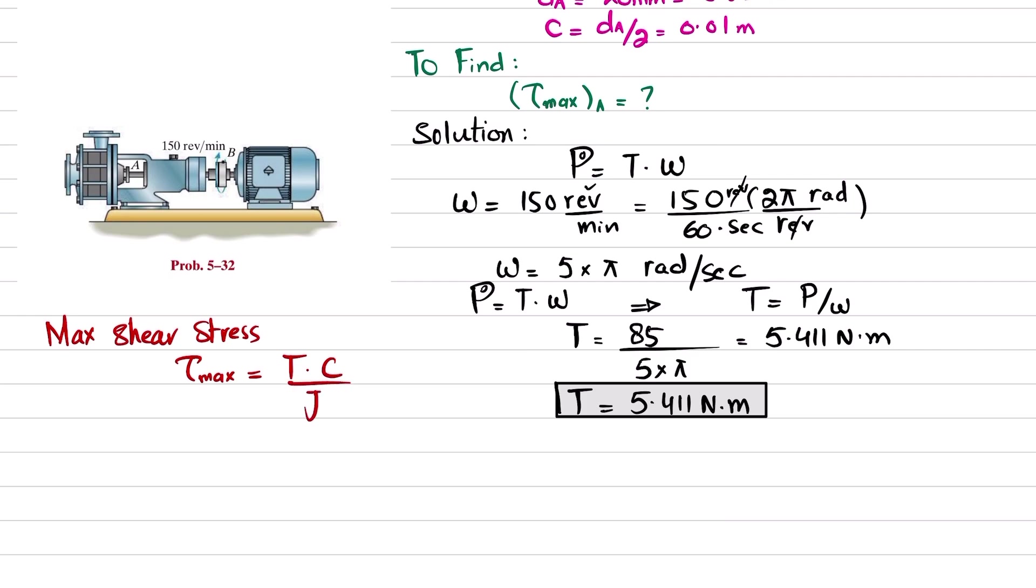Torque is 5.411 times C, which is calculated over here as 0.01 meters, divided by polar moment of inertia, which is π/2 times C to the power 4, so π/2 times 0.01 to the power 4.